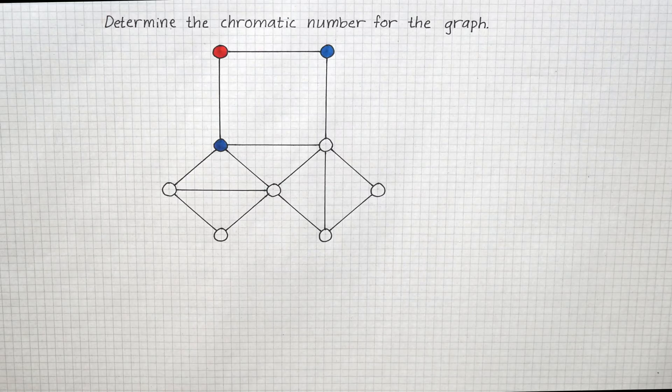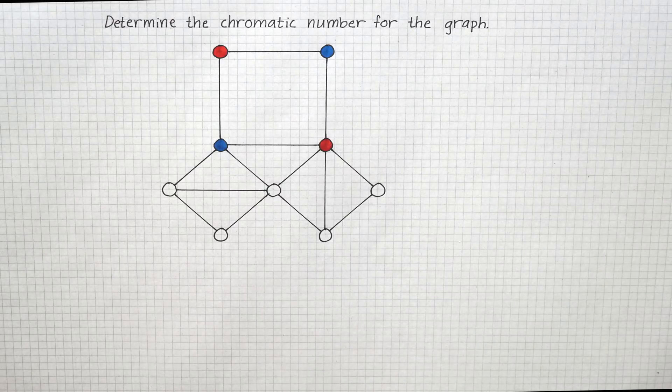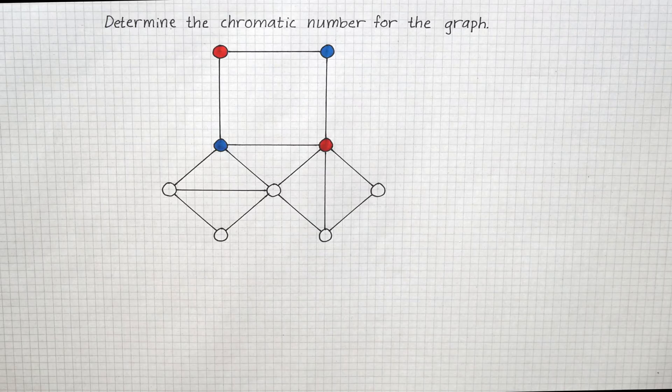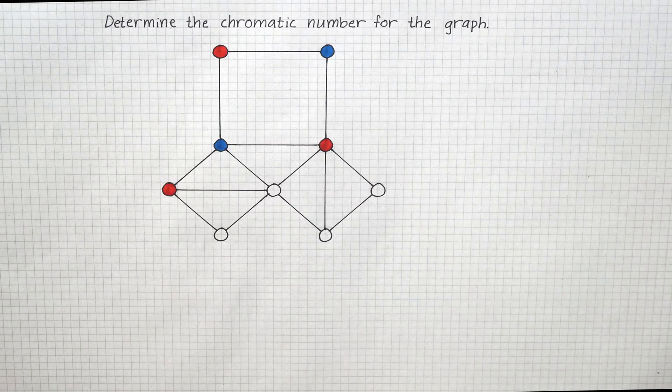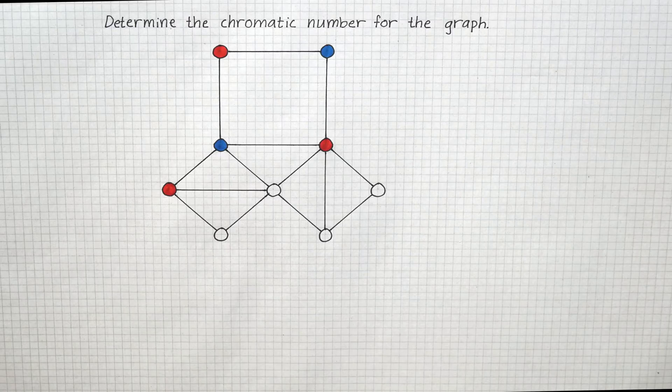This node has edges to two blue nodes which means it can't be blue itself, but red would be a suitable color. Here we have to make it red because of the blue connection. The only choice here is blue.